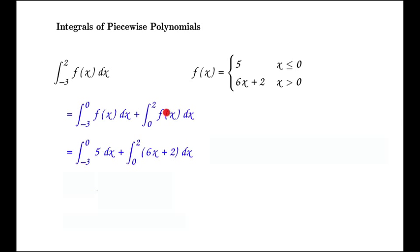For this piece of the function, we can replace f of x by 6x plus 2, and that's because for x greater than 0, this is 6x plus 2.